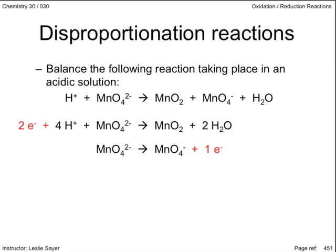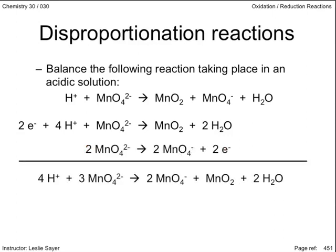If necessary, balance the electrons lost in the oxidation half-reaction with the electrons gained in the reduction half-reaction. In this case, we multiply the lower half-reaction equation by two. Finally, add the two equations, consolidating components that appear on both sides.